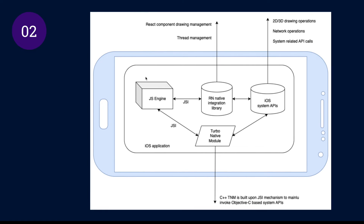So let's talk about the TurboNative architecture invoking mechanism on iOS side using this schema. As you can see, we have a JavaScript engine, we have our TurboNative Modules, we have a React Native library, and the iOS system API. The React Native integration library is communicating over JSI. We are invoking our TurboNative Modules over JSI, and TurboNative Modules is invoking any system API from there. So as you can see, this is the communication that is happening.